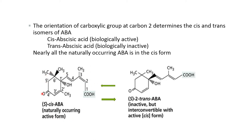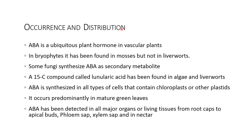Nearly all naturally occurring abscisic acid is in the cis form. Occurrence and distribution: abscisic acid is a ubiquitous plant hormone. In vascular plants and in bryophytes, it has been found in mosses but not in liverworts. Some fungi synthesize abscisic acid as a secondary metabolite. A 15-carbon compound called lunularic acid has been found in algae and liverworts.